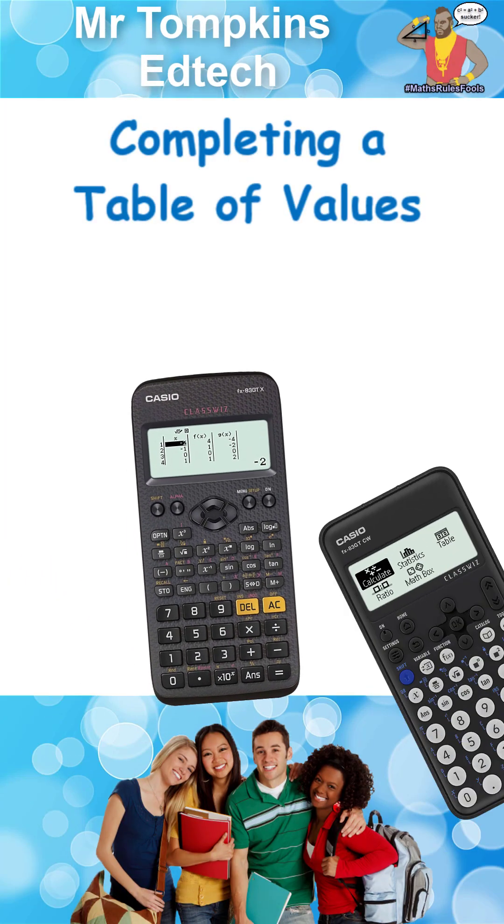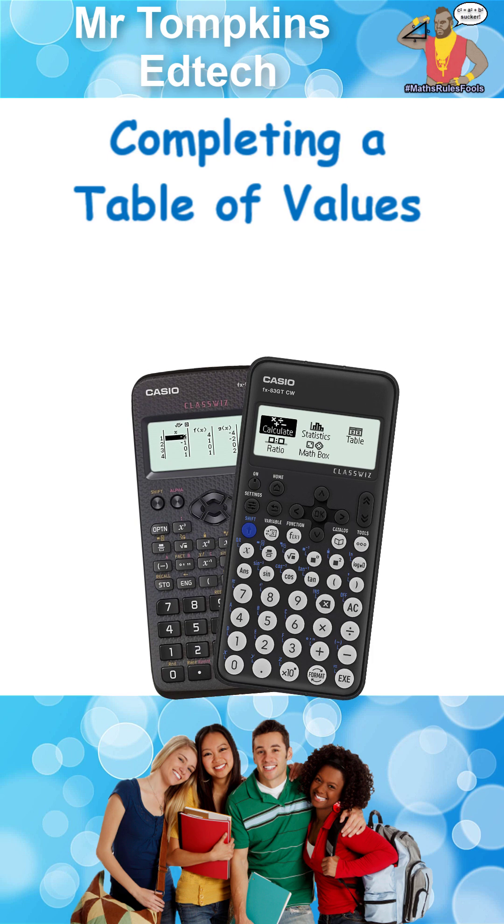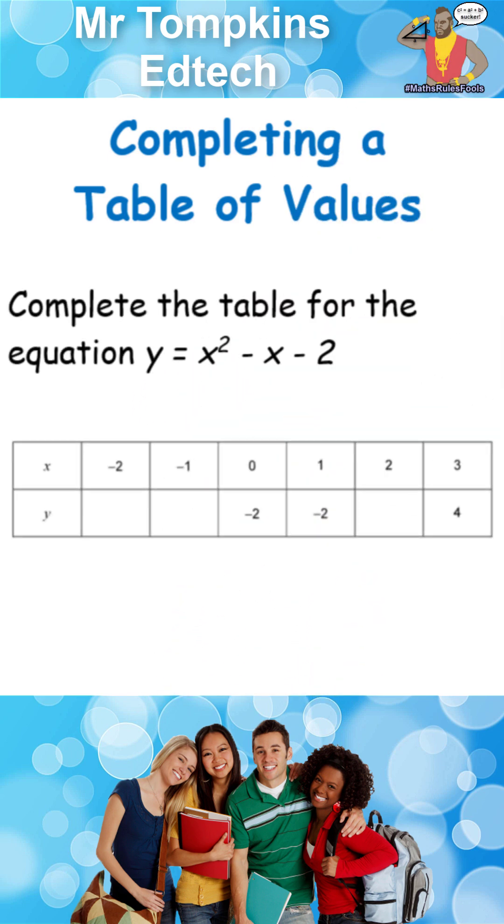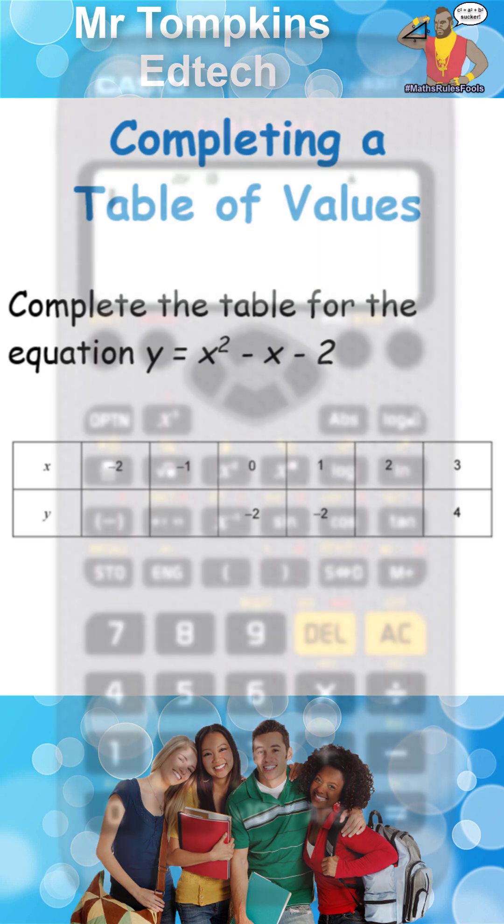Completing the table of values on the old and the new style Casio calculators. Complete the table of values for the equation y equals x squared minus x minus 2.